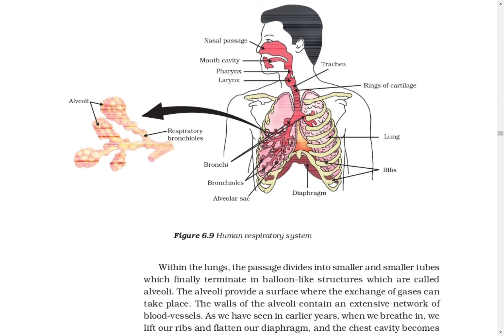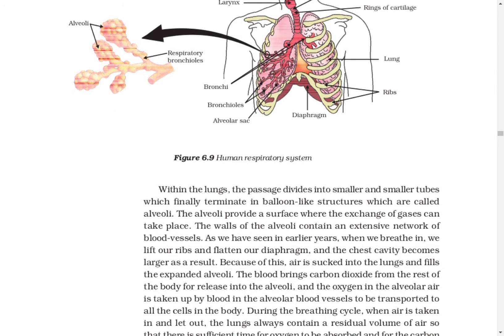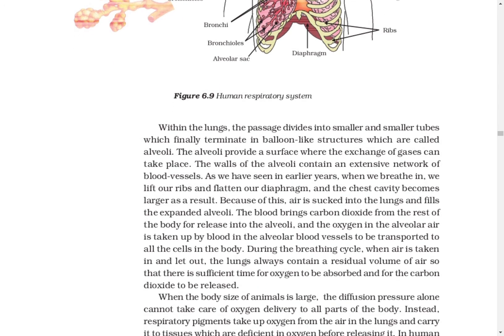The alveoli are balloon-like structures. Outside the alveoli there are many blood vessels. As the blood vessels come into contact with oxygen, they give carbon dioxide to the alveoli and take in oxygen from the alveoli. When we breathe in, our lungs fill with air, our chest cavity expands, and when we breathe out, our chest cavity comes back to its original position.